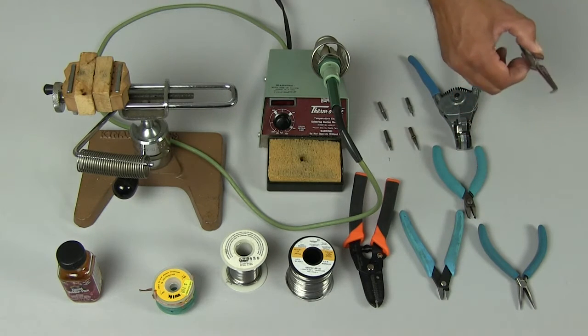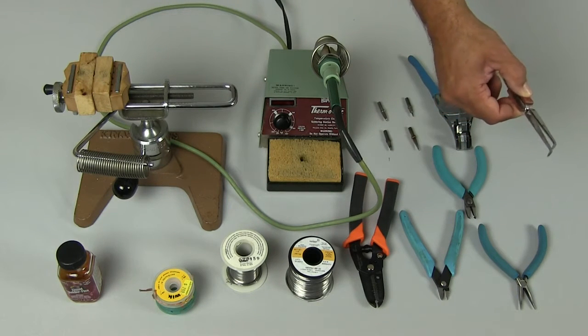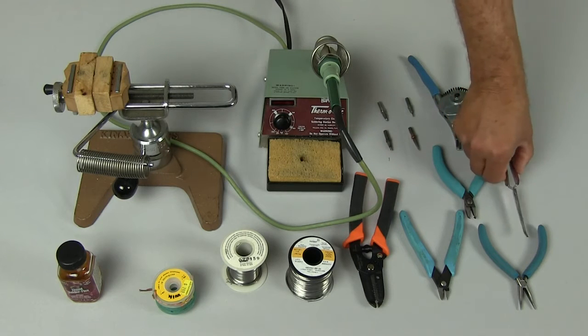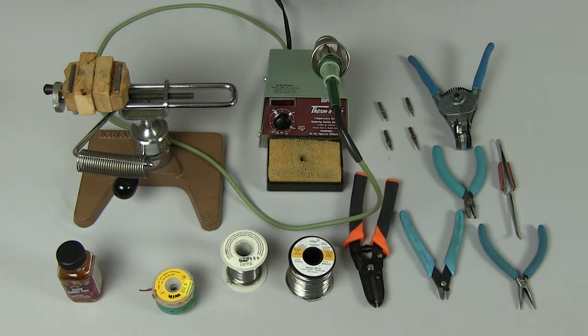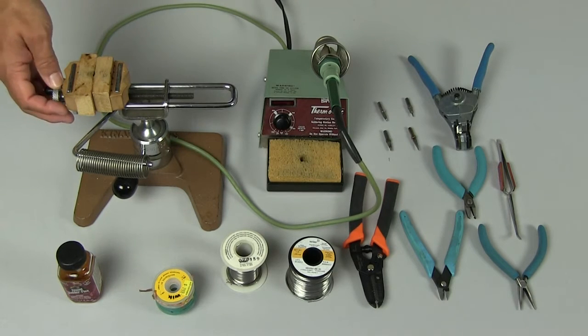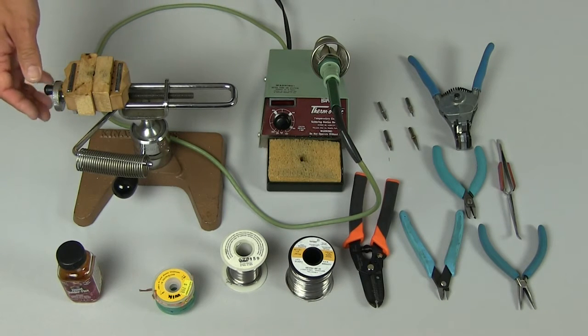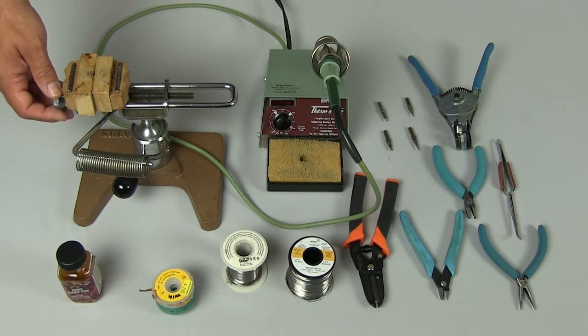Now, to hold wires in place when we need to, we also use a set of reverse tweezers. Next we want to make sure we have something to hold our work in place as we solder. Here we have a bench vise that I use to hold the wires that I'm soldering together in place so that the wires do not move in relation to each other.